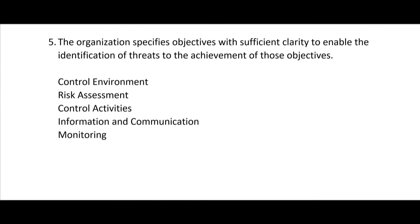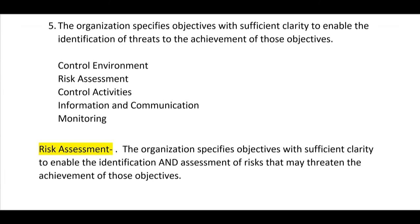Number five: the organization specifies objectives with sufficient clarity to enable the identification of threats to the achievement of those objectives. That's risk assessment — the organization specifies objectives with sufficient clarity to enable the identification and assessment of risks that may threaten the achievement of those objectives. If you see identification of threats to objectives, that's risk assessment.